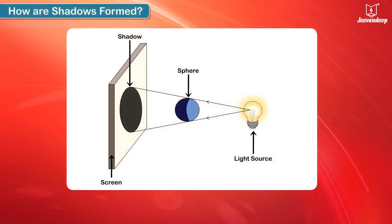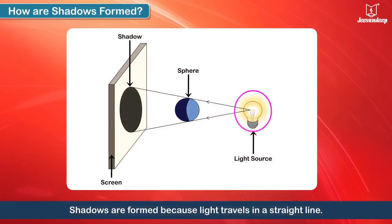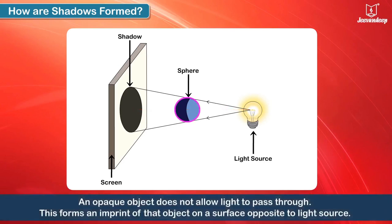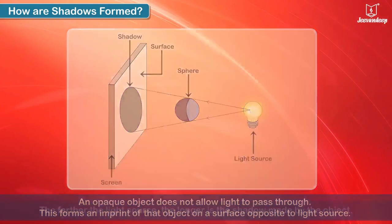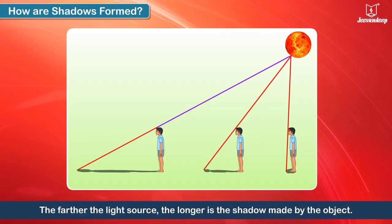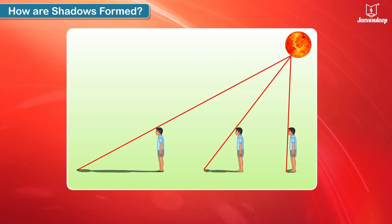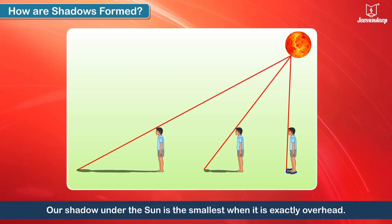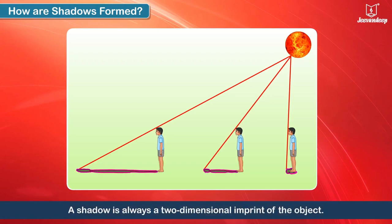How are shadows formed? Shadows are formed because light travels in a straight line. An opaque object does not allow light to pass through, forming an imprint of that object on a surface opposite to the light source. The farther the light source, the longer is the shadow made by the object. The smallest shadow is formed when the Sun is exactly overhead. A shadow is always a two-dimensional imprint of the object.